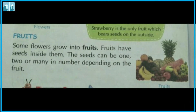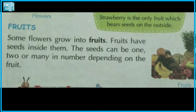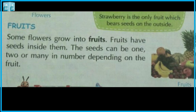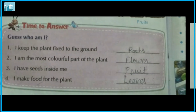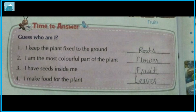Fruits: Some flowers grow into fruits. Fruits have seeds inside them. The seeds can be one, two or many in number depending on the fruit.